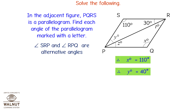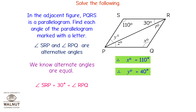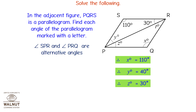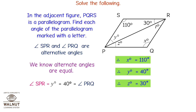Angle SRP and angle RPQ are alternate angles, and alternate angles are equal. Since angle SRP equals 30 degrees, angle RPQ equals 30 degrees, so Z equals 30 degrees. Angle SPR equals Y equals 40 degrees, and since angle SPR equals angle PRQ, T equals 40 degrees.